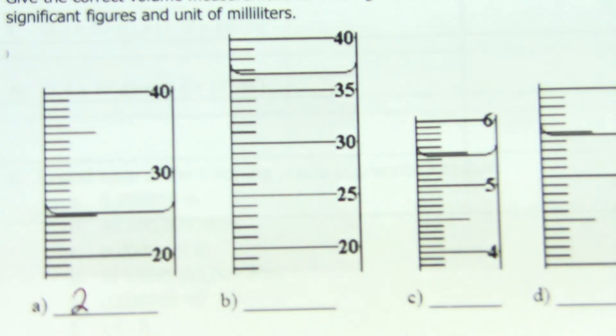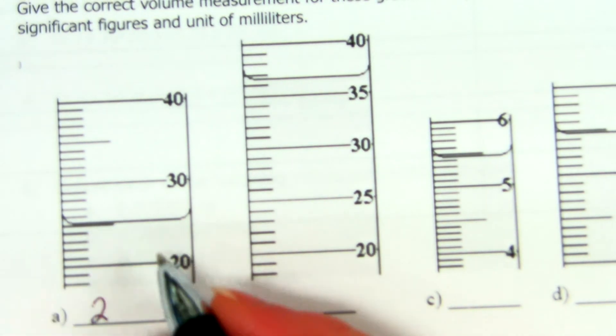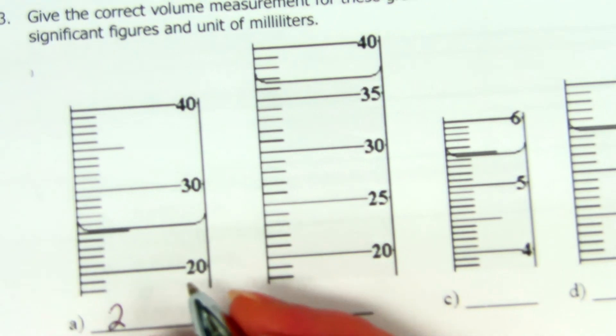So, if my smallest markings are 1, what do I have to do? 0.1 or something. So, does that look like 25.1 to you? Yeah? Okay. So, 25.1, and then we would have this, and it's in milliliters.